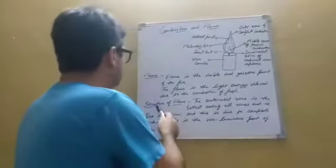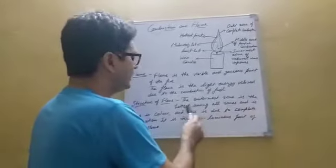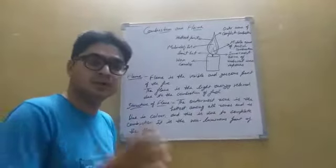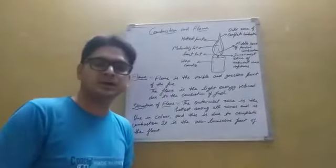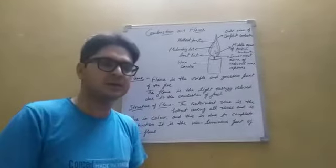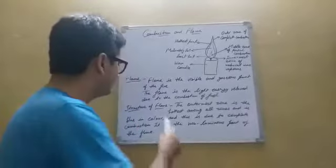Regarding the structure of flame: the outermost zone is the hottest among all zones and it is blue in color. You can see this blue part when cooking in the kitchen. When more dust particles come, it converts to yellow. This is the structure of flame.